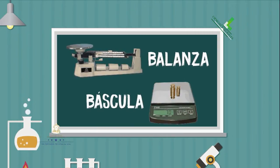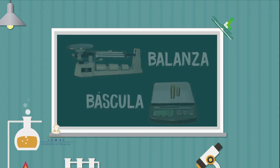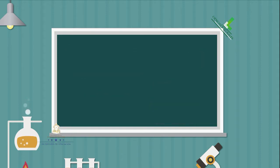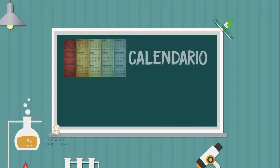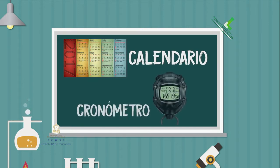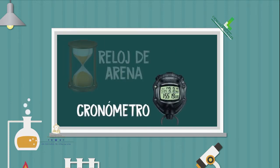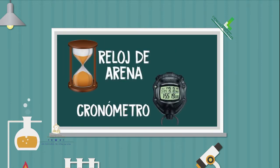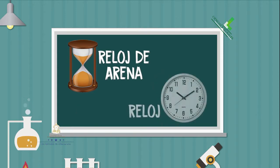Ahora, los instrumentos que sirven para medir tiempo. Aquí encontramos el calendario, que es el más común. También están el cronómetro, el reloj de arena, muy común en la antigüedad, y el reloj, que es el de uso diario.